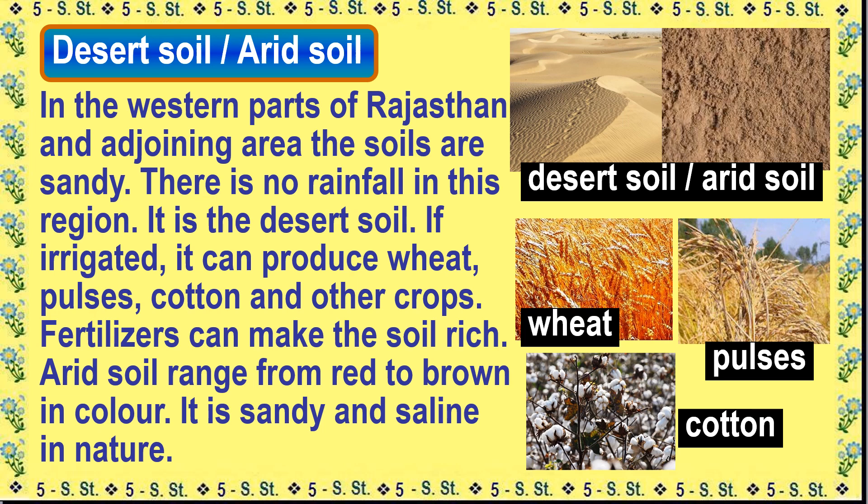In the western parts of Rajasthan and adjoining areas, the soils are sandy and there is very little rainfall — this is desert soil. If irrigated, it can produce wheat, pulses, cotton, and other crops. Fertilizers can make the soil rich. Arid soil ranges from red to brown in color and is sandy and saline in nature.